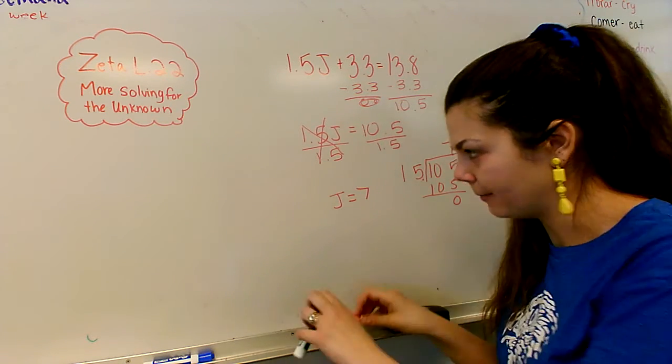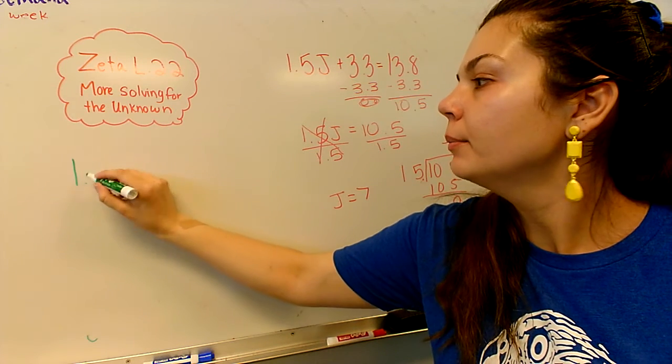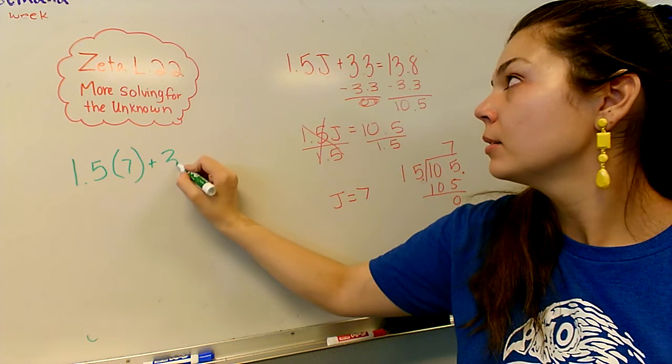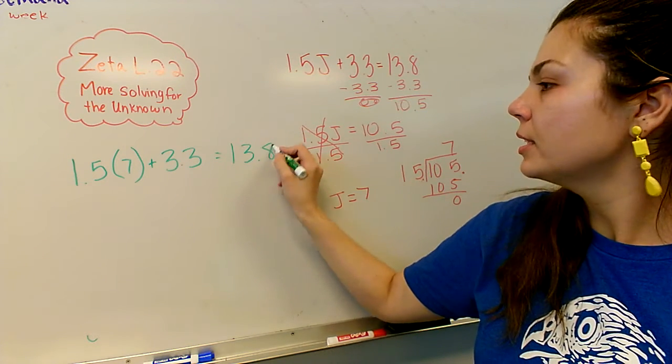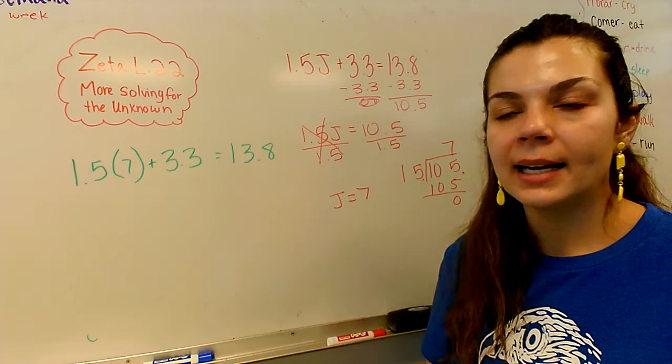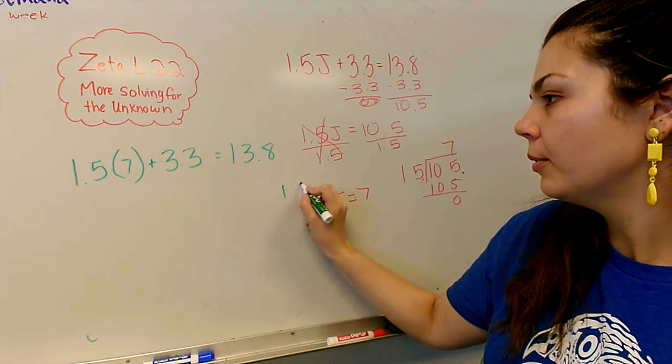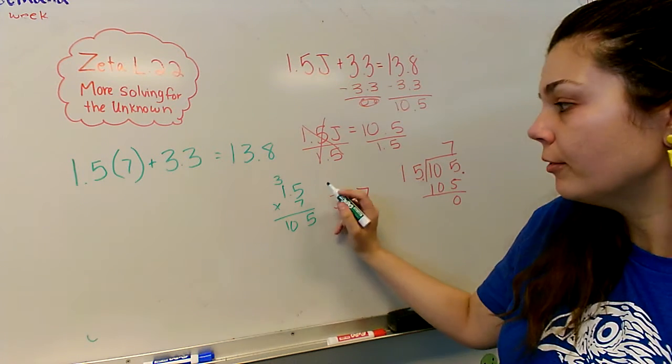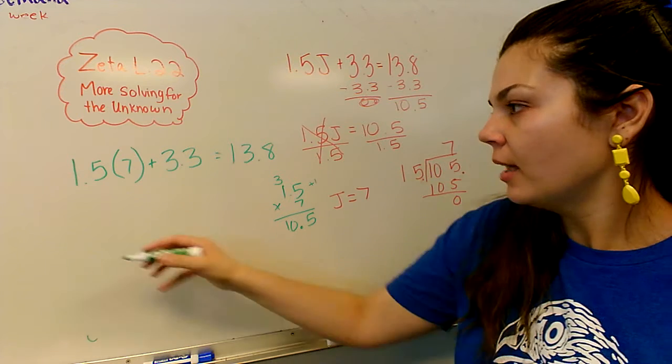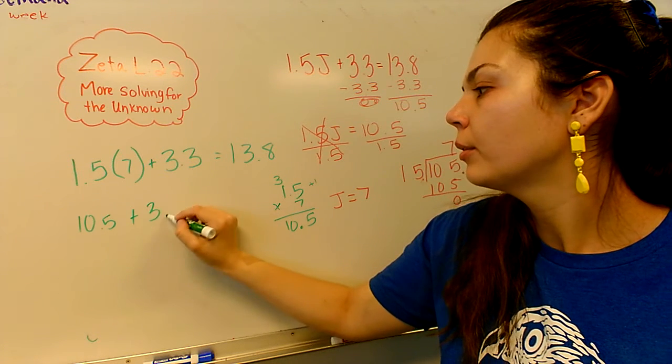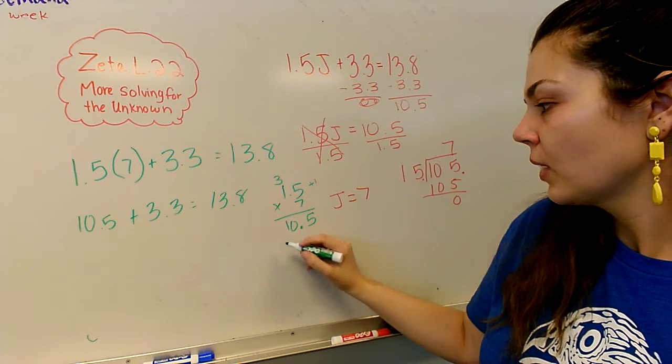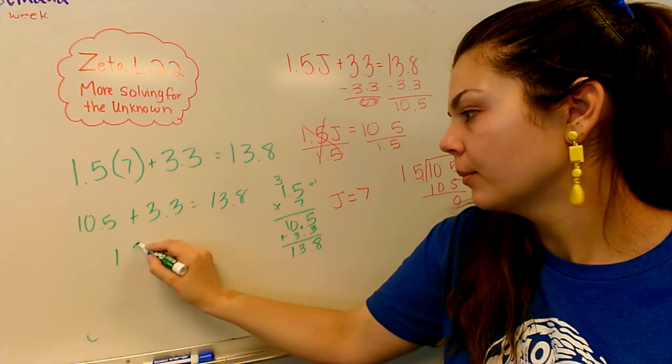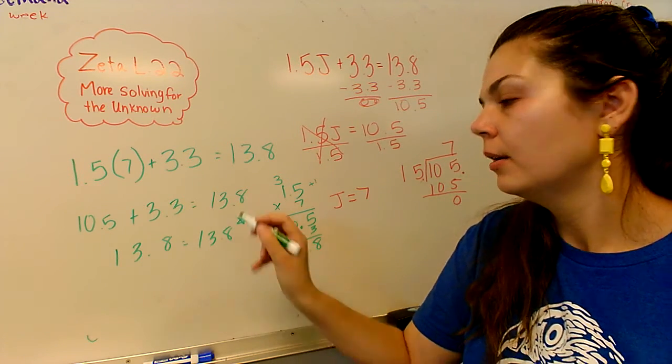So let's go ahead and see if we're right by checking. All right, so I've got 1.5 times 7, my variable I'm putting in, plus 3.3 equals 13.8. All right, let's check it out. The first thing I need to do: 7 times 1.5. 1.5 times 7. 35 and 10. How many times do I need to move my decimal over? Only once. So 10.5 plus 3.3 equals 13.8. I have 10.5 plus 3.3. Make sure you're lining up your decimals. And I've got it. 13.8 equals 13.8.